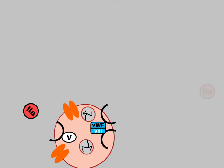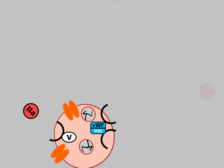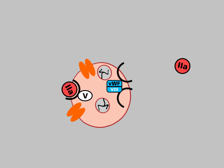Thrombin binds to its receptor on quiescent platelets. This leads to the activation of factor V associated with the platelet surface. In addition, factor VIII is activated and released from its binding to von Willebrand factor. The platelet is activated.